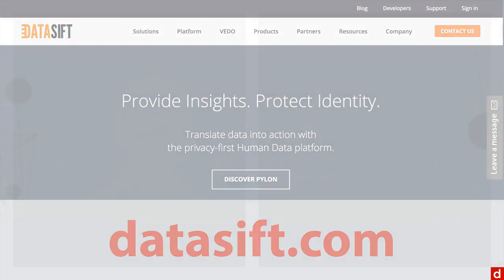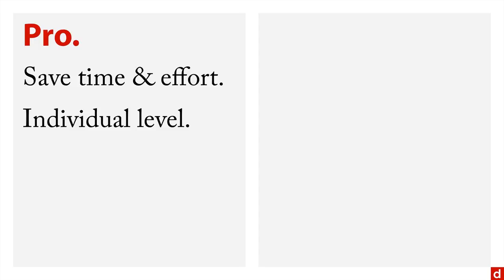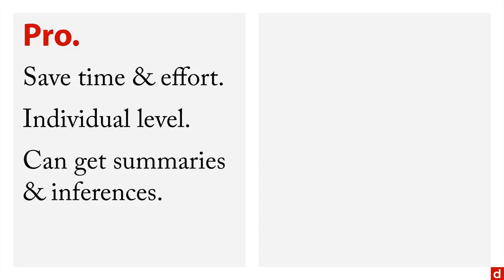When it comes to using data brokers, there are pros and cons. The pros are first that it can save you a lot of time and effort. It can also give you individual-level data, which can be hard to get from open data — open data is usually at the community level, whereas brokers can give you information about specific consumers. They can even provide summaries and inferences about things like credit scores, marital status, and possibly even whether a person gambles or smokes.